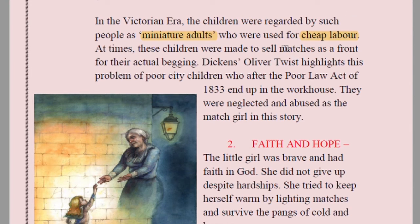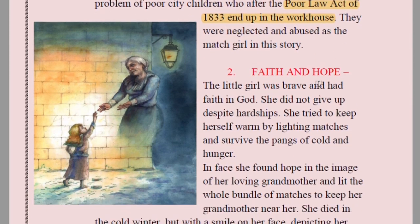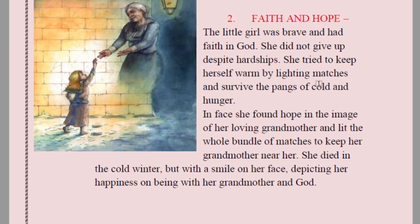In the Victorian era, children were regarded as miniature adults — used for cheap labor. They are easy tools for exploitation; young children don't know they are being exploited. At times these children were made to sell matches as a front for actual begging. Dickens's Oliver Twist highlights these problems of poor city children, who after the Poor Law Act of 1833 ended up in the workhouse.